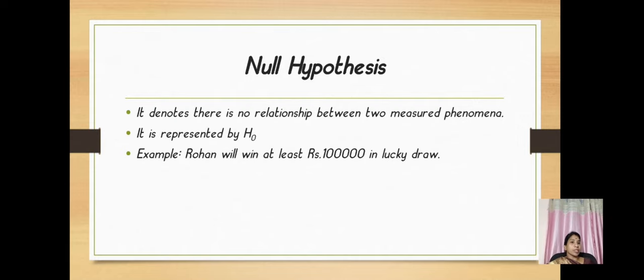Null hypothesis denotes there is no relationship between two measured phenomena. It is represented by H0. Example: Rogan will win at least rupees one lakh in a lucky drop.